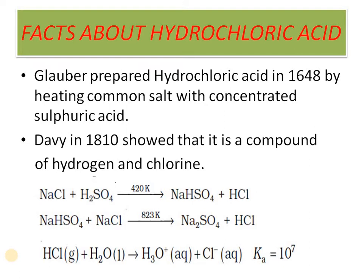We know that the reaction hydrogen plus chlorine gives HCl in the presence of diffused sunlight — the reaction may be explosive, therefore diffused sunlight is used. The reaction shown is: NaCl plus concentrated H₂SO₄, at a temperature less than 200°C or 420 K, gives rise to NaHSO₄ plus HCl.